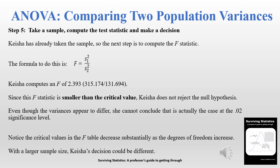Keisha is now ready for step five: take a sample, compute the test statistic, and make a decision. She's already taken the sample and computed the variances and means. To compute the F stat we simply take the larger variance divided by the smaller variance. We end up with an F stat of 2.393, which is smaller than the critical value. She concludes she cannot reject the null hypothesis at the 0.02 level of significance.